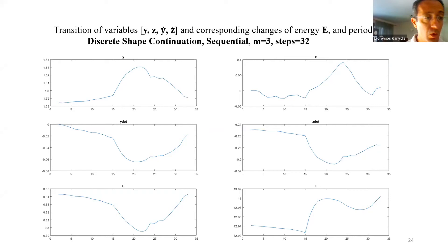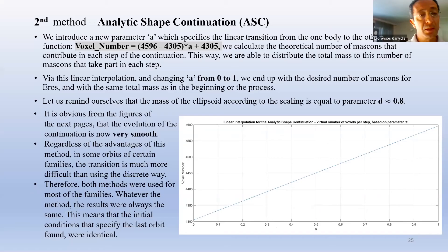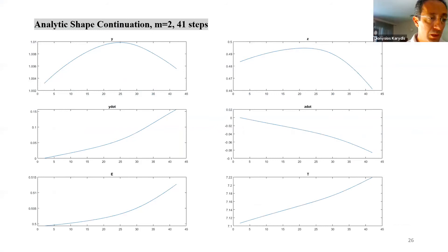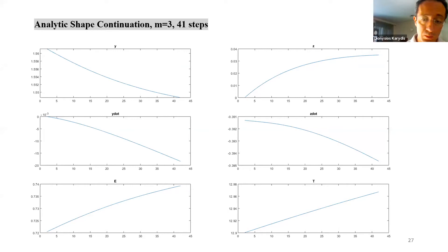We can move on now to the second method, that of the analytic shape continuation. Using the function depicted here, we calculate the number of mass cons that contribute in each step of the continuation. This way, we are able to distribute the total mass to the number of mass cons that take part in each step. We see clearly how smooth an analytic shape continuation is for an orbit of multiplicity 2 that took place in 41 steps. Another example is shown here for a higher multiplicity orbit.